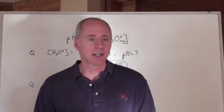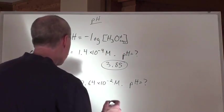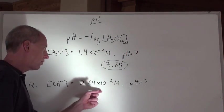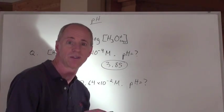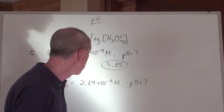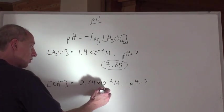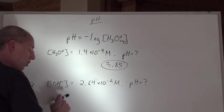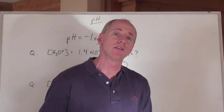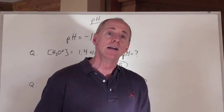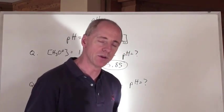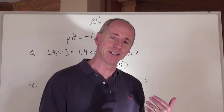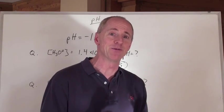Now, the hydroxide ion concentration in a solution is 6.4 times 10 to the negative 2. That means the hydronium is around 10 to the negative 12 or so — really about 10 to the negative 13. So the hydroxide is going to be bigger than the hydronium, and when we calculate the pH here we should get a base — a pH greater than 7. There are a couple of ways to calculate that.